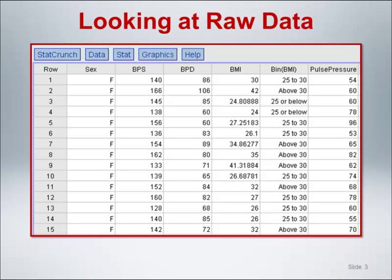Here we see a snapshot of the blood pressure data which was used for a homework exercise in Module 2. We can quickly see that values for things like sex, systolic blood pressure, and diastolic blood pressure are within expected clinical ranges. It is also a good idea to scan the raw data for the presence of missing values and to note how missing values are indicated or coded in the raw data. There are no missing values shown in the data snapshot provided here.